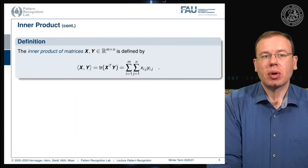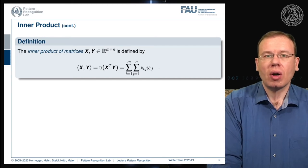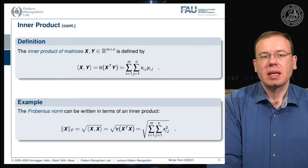We can also define inner products of matrices. The inner product of a matrix is essentially x transpose y, and then we take the trace of the resulting matrix. This results in a sum over all the elements of x multiplied with all the elements of y—essentially a two-dimensional sum because they're matrices. We mix all the elements with each other and sum them up.